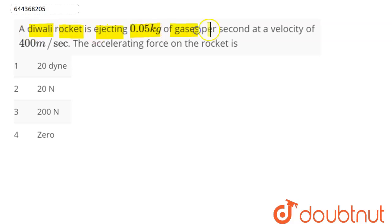So here we can say this is our rocket out of which gas is being ejected out of this rocket with relative velocity given here, that is velocity of jet with respect to rocket as 400 meter per second.